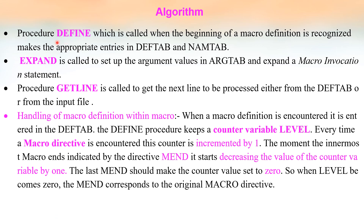To summarize the procedures: DEFINE is called when the beginning of a macro definition is recognized and makes appropriate entries in DEFTAB and NAMTAB. EXPAND sets up argument values in ARGTAB and expands a macro invocation statement. GET_LINE gets the next line to be processed either from DEFTAB (if EXPANDING equals true) or from the input file. For handling macro definitions within macros, the LEVEL variable is used — every time a MACRO directive is encountered, LEVEL is incremented; when MEND is encountered, LEVEL is decremented. When LEVEL becomes zero, the MEND corresponds to the outermost macro directive.